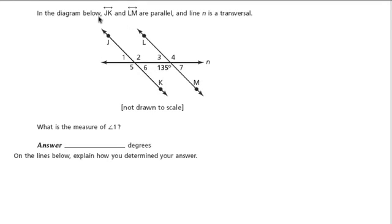In this problem we have two lines, JK, so here's point J and K, that's a line, and LM, that's also a line, they're parallel, and line n is a transversal, so here's n.